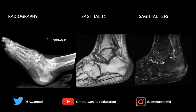Hello everyone, and welcome to week 29 of MSK Unknown Case Series. We have a radiograph, a sagittal T1-weighted image through the ankle, and a sagittal T2 fat-sat MR image through the ankle. This is a patient that has fever, an ulcer along their ankle, and they're concerned for acute osteomyelitis.